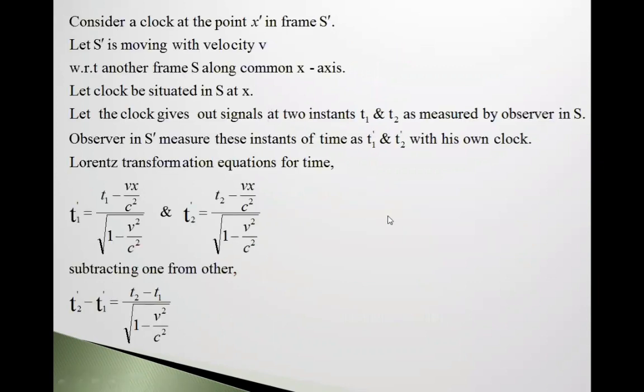Now friends, here suppose frame S and frame S' is moving with velocity V with respect to frame S. Now a clock is placed at point x' in frame S' and also another clock is placed in frame S at x.